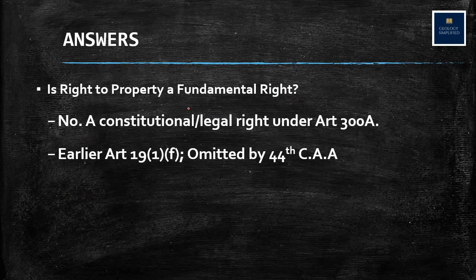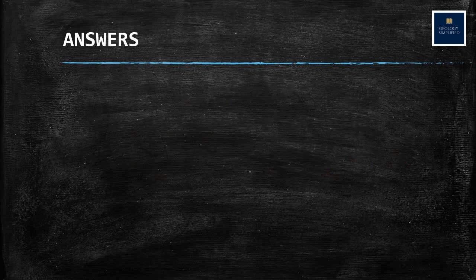Is right to property a fundamental right? No — it used to be earlier. It was included in Article 19(1)(f), but it was omitted by the 44th Constitutional Amendment Act of 1978. That amendment included a separate article, Article 300A, and made right to property a legal or constitutional right. So it is no longer a fundamental right but a legal right.